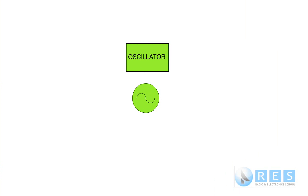An oscillator generates a sine wave at a particular frequency. This slide shows the two possible ways of presenting an oscillator in a block diagram. The one that you're likely to get in your assessment is this one.